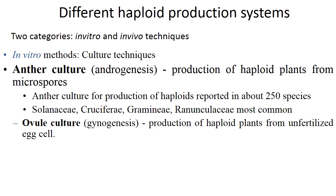The ovule is the inner part of the ovary, or the seeds — the part from which we obtain seeds is the ovule, and the fruit wall or fruit we obtain is the ovary where fertilization takes place. Coming to anther culture: this is for the production of haploid plants from microspores, reported in about 250 species like Solanaceae, Cruciferae, Graminae, Ranunculaceae.